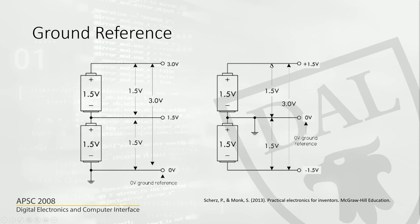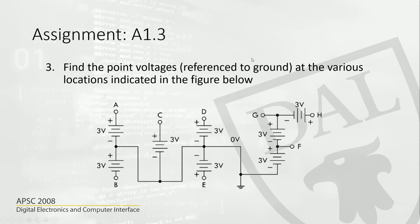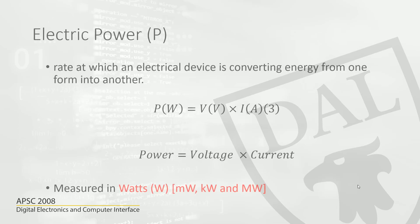For now, just remember that you will always have to specify which point is your ground reference, and then consider the voltage difference or potential difference from that point to all other points. Let's do a small problem to understand this better. This is assignment question 1.3 — you will have to find the point voltages with reference to the ground. The ground is marked here, and you will have to find the potential difference from each of those points to the ground.